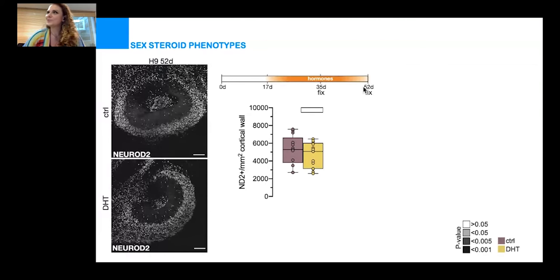52 days is already quite long, so we devised a pulse-chase experiment in which we shortened this exposure to hormones. We start again at 17 days and stop at 35 days, then grow organoids without hormones until day 52. In this setup, we indeed observed a significant increase in the number of neurons at day 52 in DHT-treated organoids. Basically, what we think is happening is that through an increase in basal progenitors, DHT causes an increase in neuronal numbers.